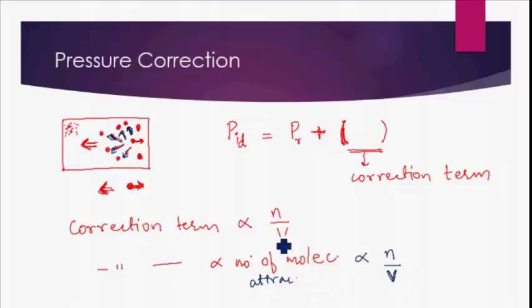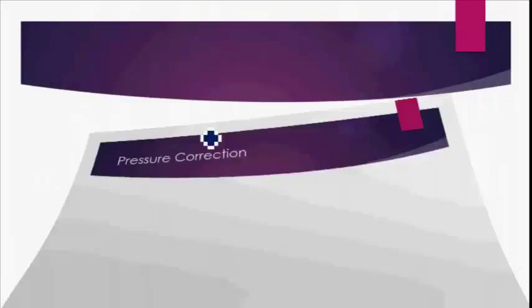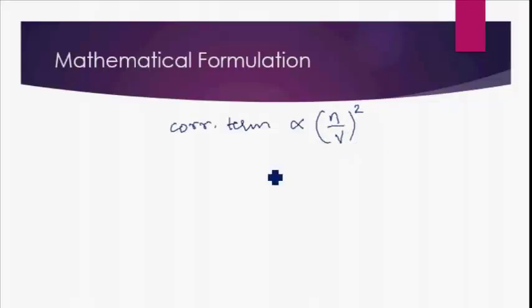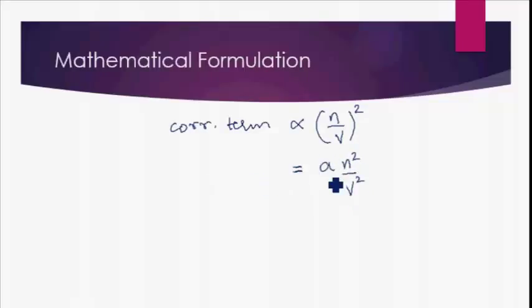We see that the correction term depends on two different things: one is the number of collisions and the other is the number of molecules attracting the colliding particle — but both of these terms depend on the density of molecules, which is n/v. Hence the correction term is directly proportional to (n/v)², that is n/v multiplied by n/v. Removing the proportionality sign, we introduce a constant of proportionality — for volume we called it b, so let's call this one 'a'. The correction term becomes an²/v², where 'a' is the constant of proportionality.